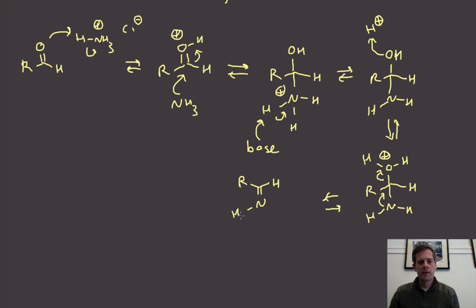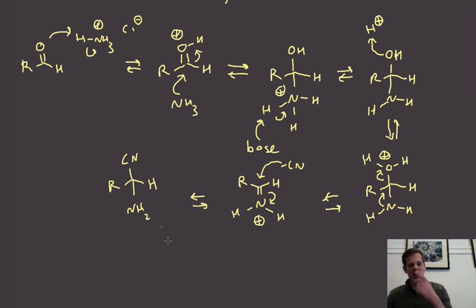When that happens we are now in business because we have just generated our iminium ion. At this point we're at our iminium ion, highly electrophilic, and now we're in a position to have the cyanide group add to the iminium ion. This is then going to give us basically our alpha-amino nitrile.